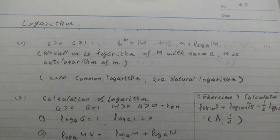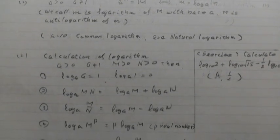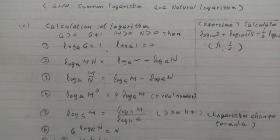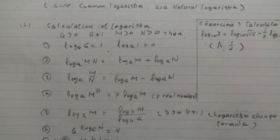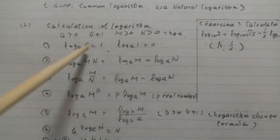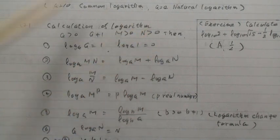And Property 2. Calculation of logarithm. A is positive, A is not 1, M is positive, N is positive then. And check 1, log A A equal 1, log A 1 equal 0. A to the 1 equal A, A to the 0 equal 1.